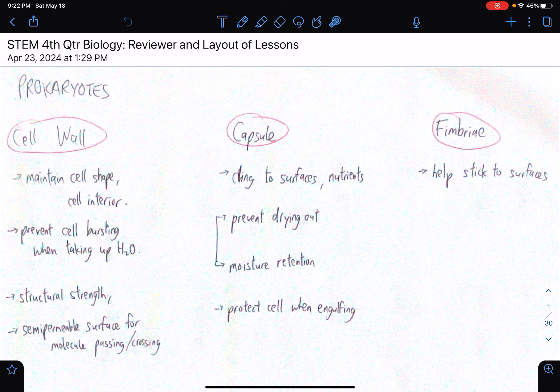So with prokaryotes, they have these parts. There's a cell wall, a capsule, and fimbriae. For a cell wall, this is not only limited to prokaryotes. It's also seen in plant cells but not animal cells. So usually prokaryotes, in other words bacteria, plant cells, and animal cells are usually compared in terms of their organelles.